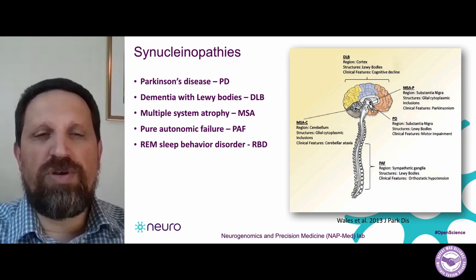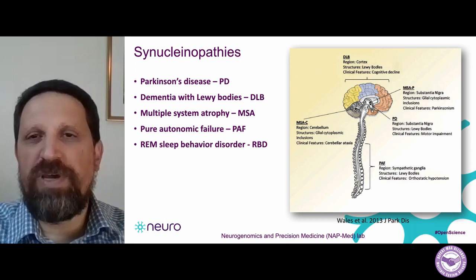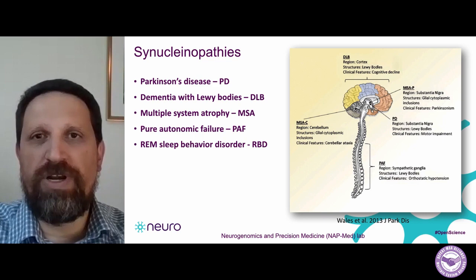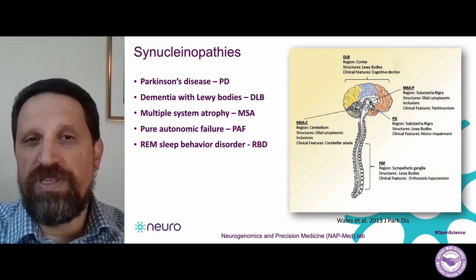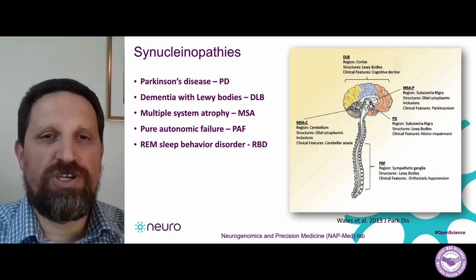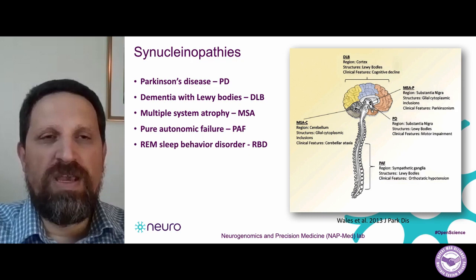The main diseases that belong to this group are Parkinson's disease (PD), dementia with Lewy bodies (DLB), multiple system atrophy — the main topic of our talk — which I will call MSA, pure autonomic failure, and REM sleep behavioral disorder or RBD. RBD is slightly different in that it's a prodromal condition — people who have this sleep disorder later go on and develop Parkinson's disease, dementia with Lewy bodies, or multiple system atrophy in most cases.